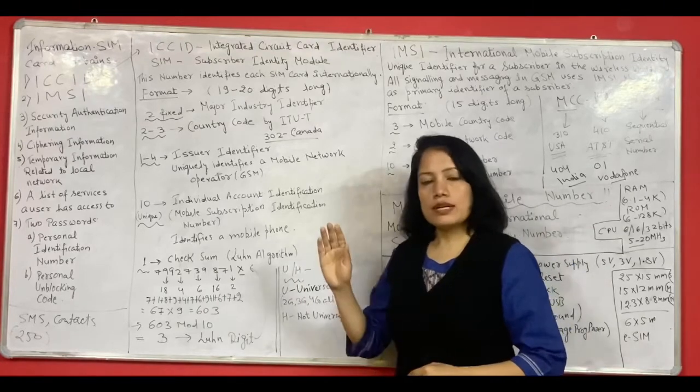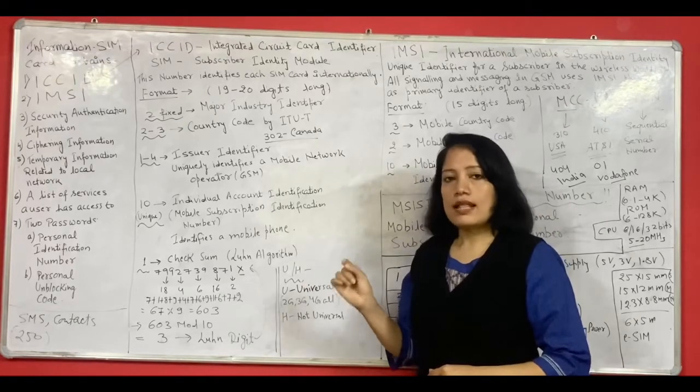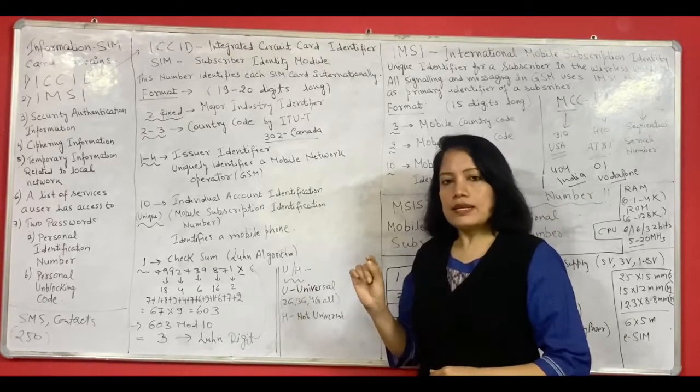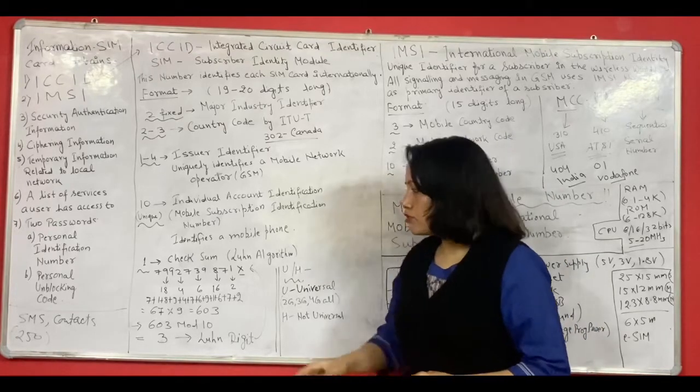Now there is one more digit which is the last digit which is called as checksum digit. And that digit is decided based on Luhn's algorithm. Now let me explain through an example.